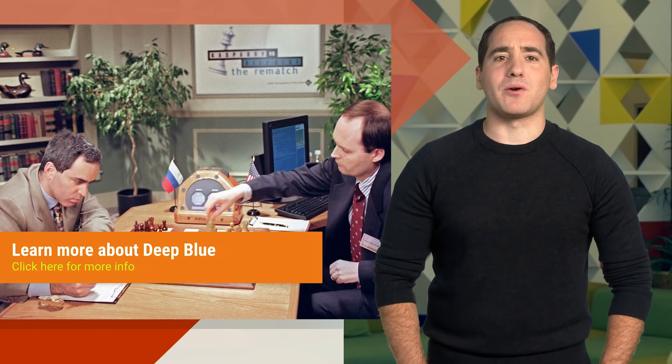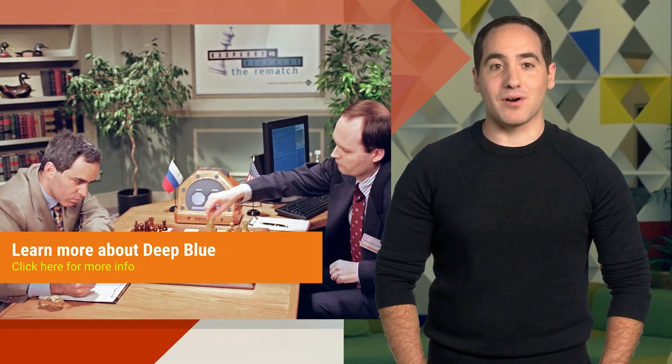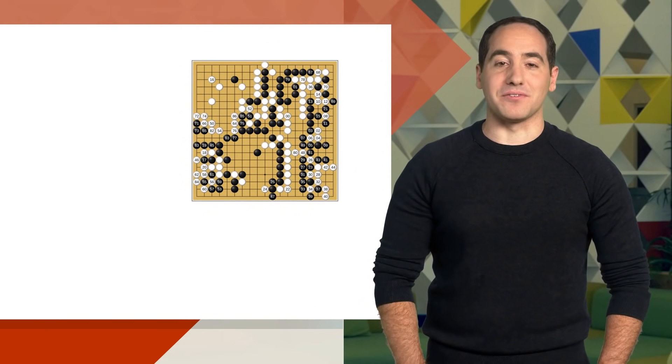Early AI programs typically excelled at just one thing. For example, Deep Blue could play chess at a championship level, but that's all it could do. Today, we want to write one program that can solve many problems without needing to be rewritten. AlphaGo is a great example of that.